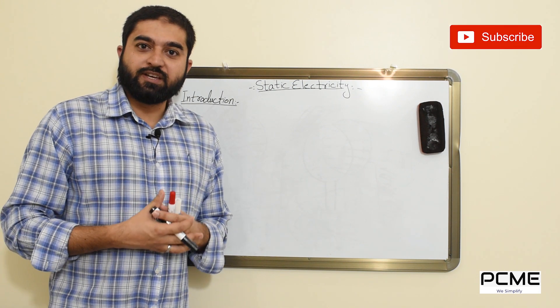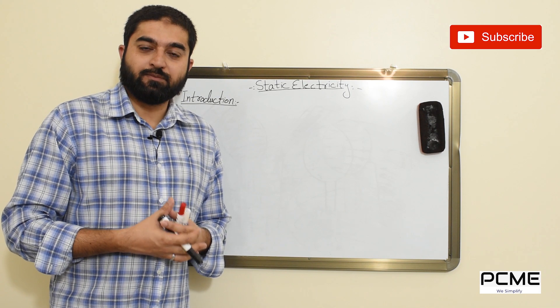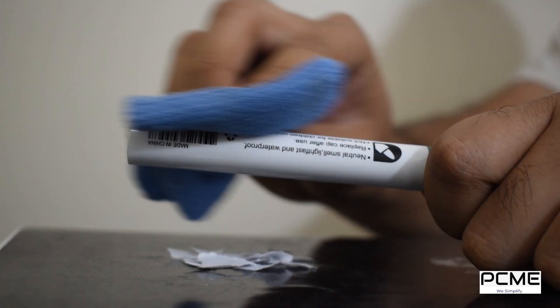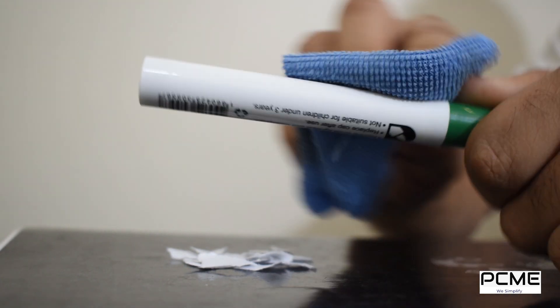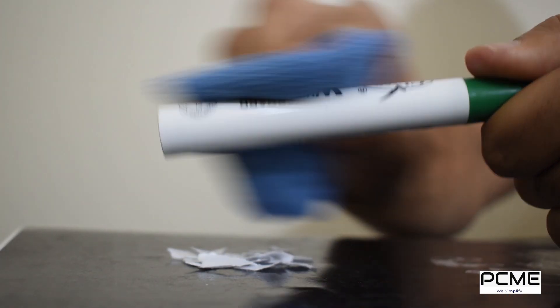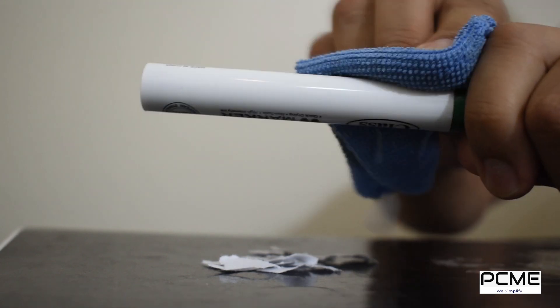Let me show you with the help of an experiment how the charge is developed. In this experiment I am rubbing the woolen cloth against the plastic marker. Now due to the friction, charge will be developed on the body of the marker.